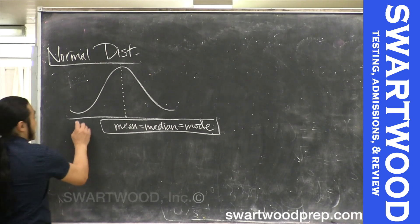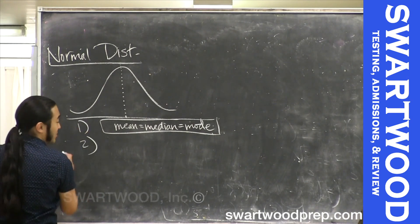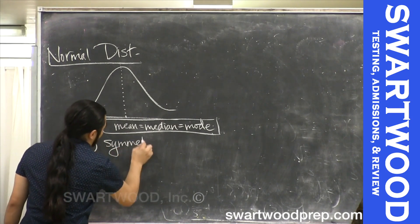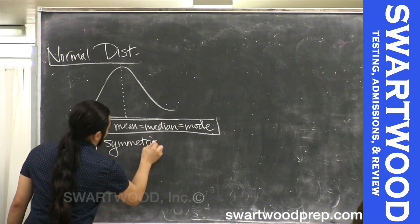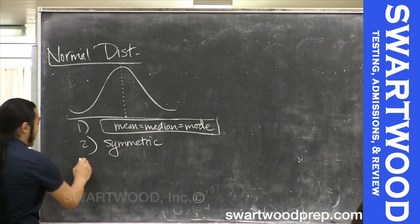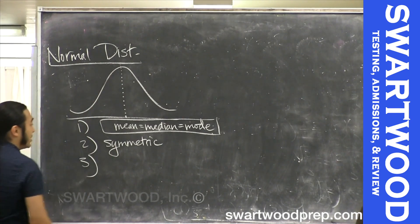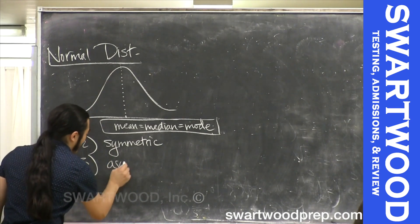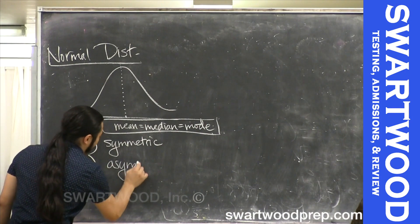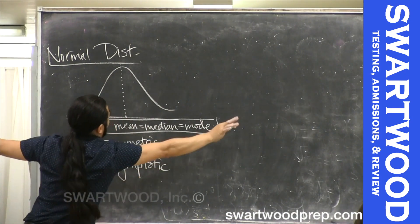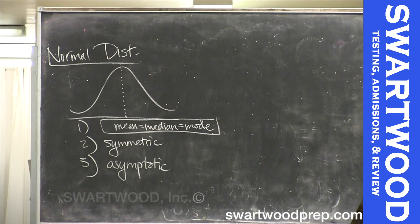It's symmetric. So the mean, median, and mode are the same. Number two, it's symmetric — which kind of conveys the same information in some sense, almost, not quite. And then number three — they always say this, but you're never going to use this — it's asymptotic. Meaning it just goes up to infinity at the ends, but the ends are so small it doesn't really do anything for you.